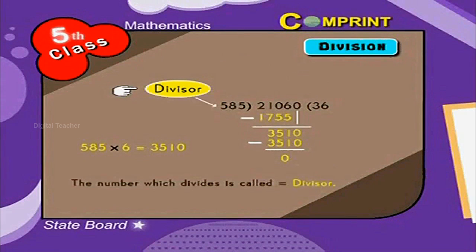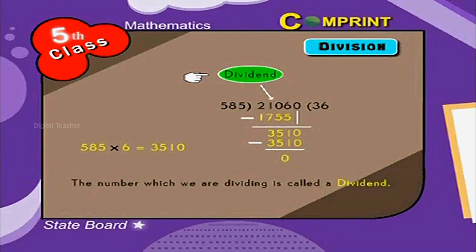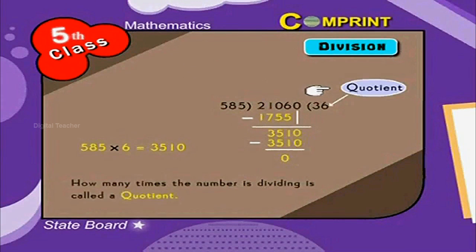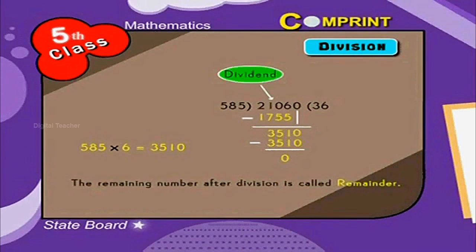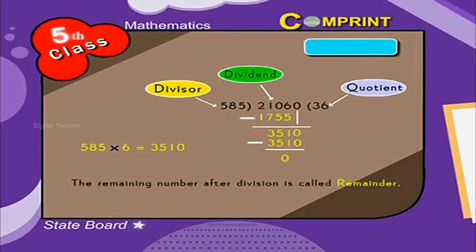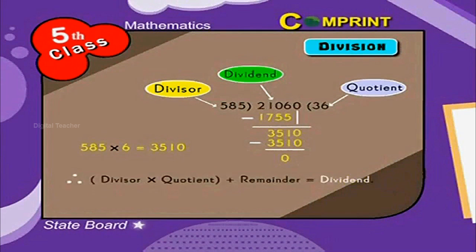The number which divides is called divisor. The number which we are dividing is called a dividend. How many times the number is dividing is called a quotient. The remaining number after division is called remainder. Here 21,060 is dividend, 585 is divisor, and 36 is quotient. Therefore, divisor into quotient plus remainder is equal to dividend.